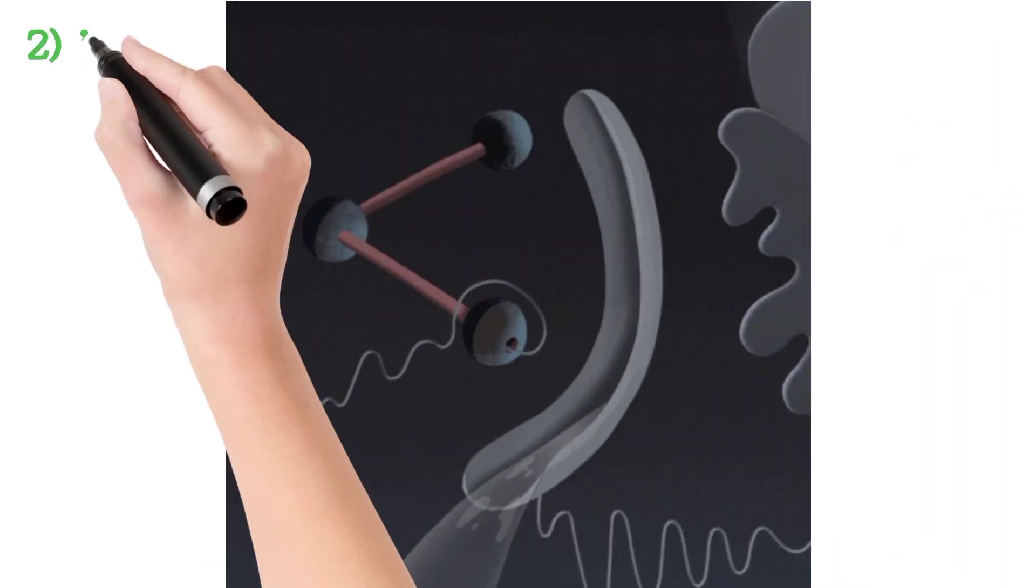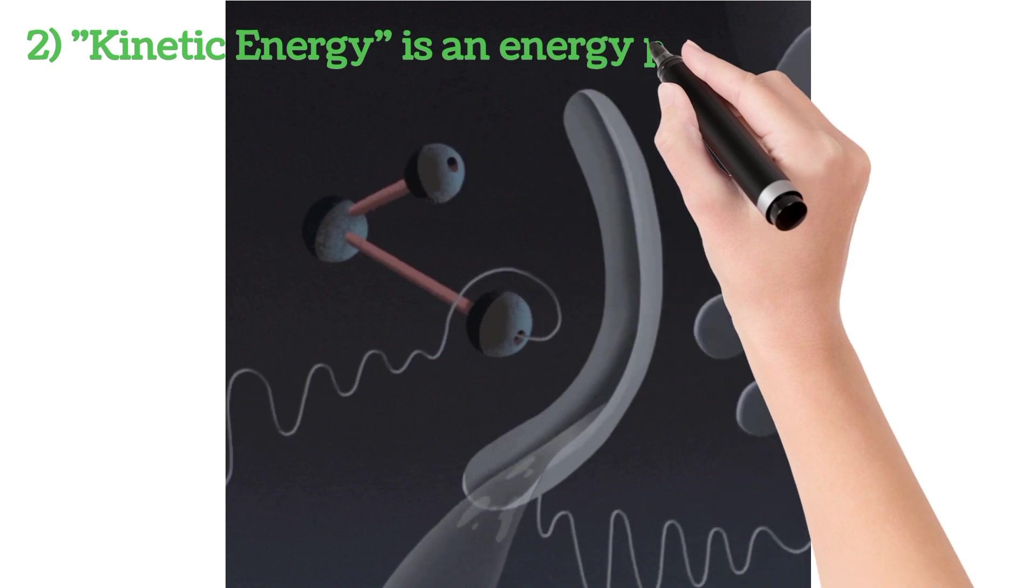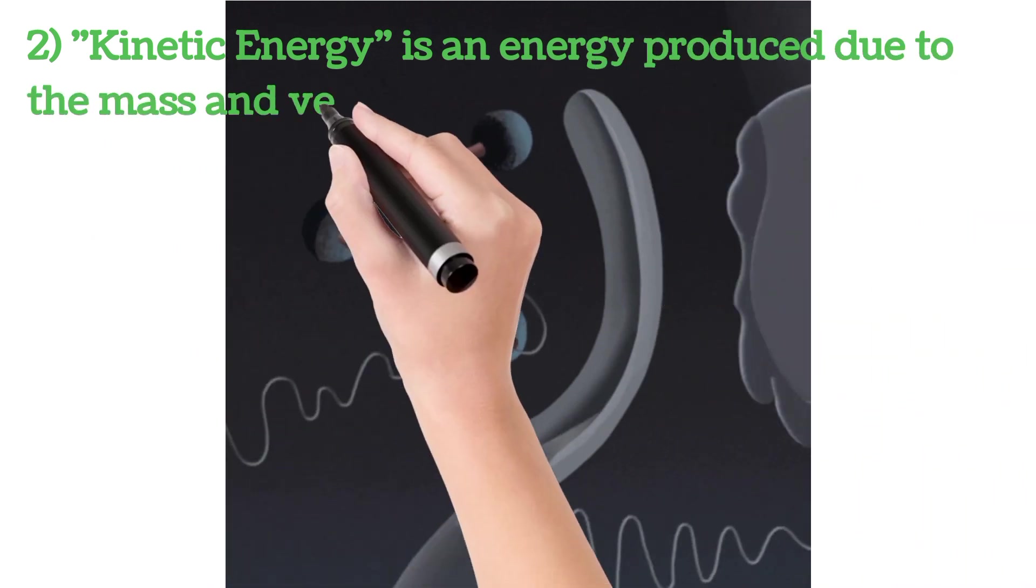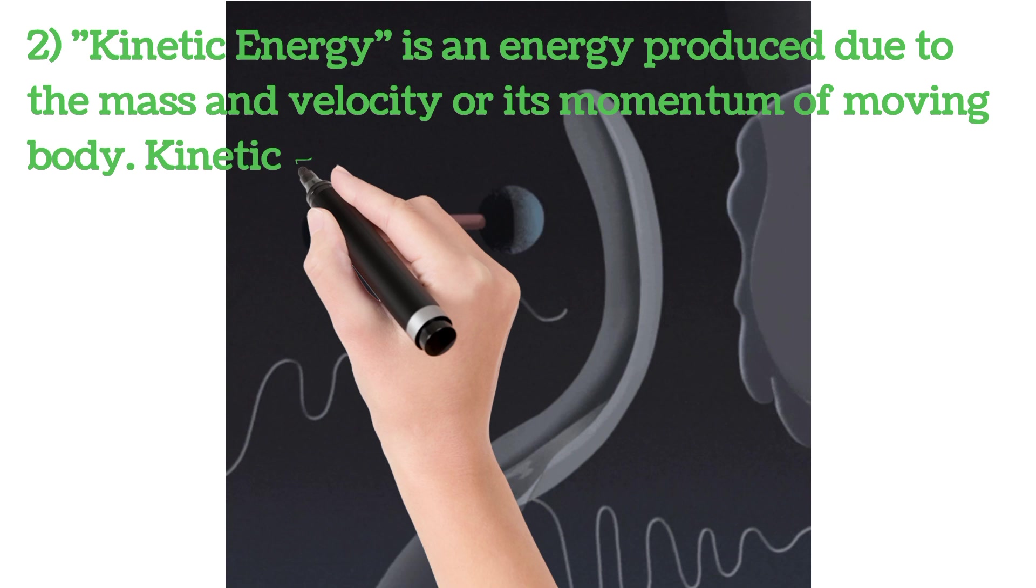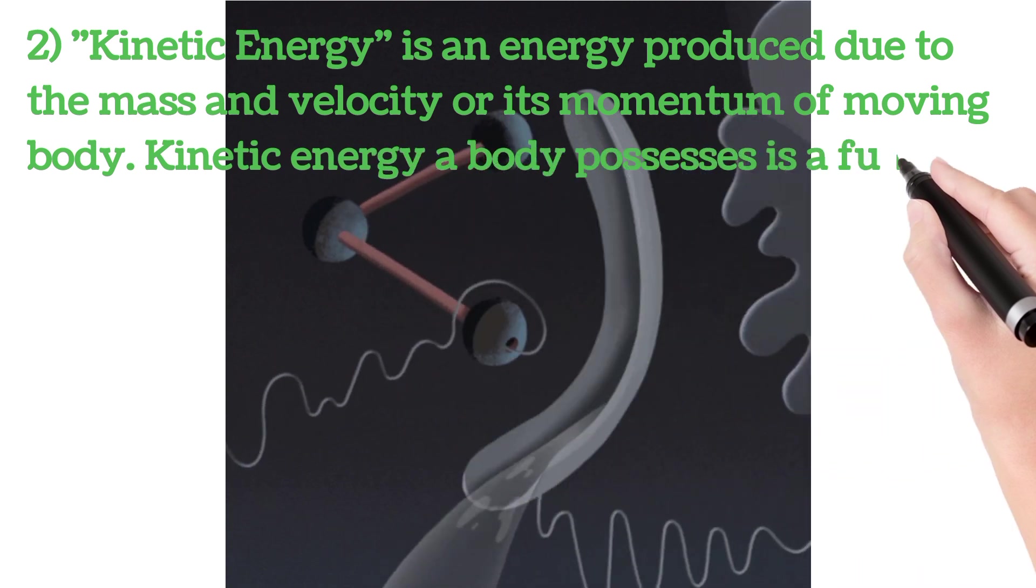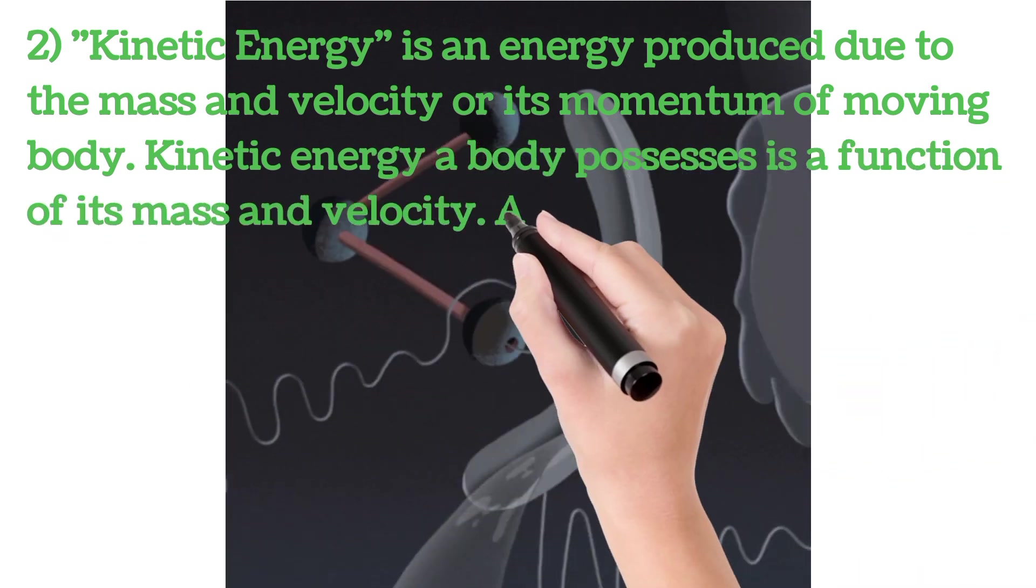Number 2: Kinetic energy. Kinetic energy is an energy produced due to the mass and velocity or its momentum of a moving body. Kinetic energy a body possesses is a function of its mass and velocity.